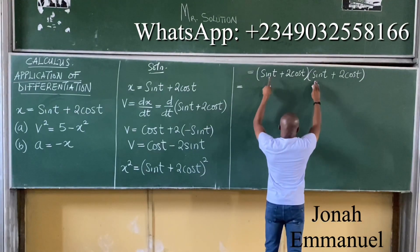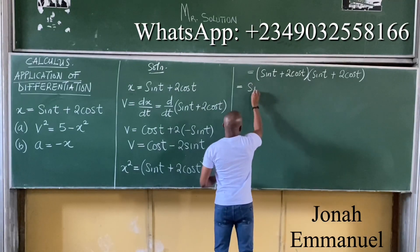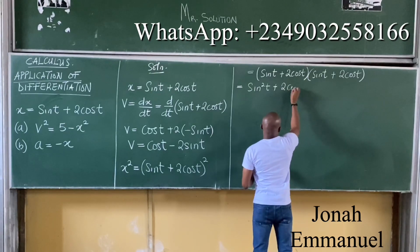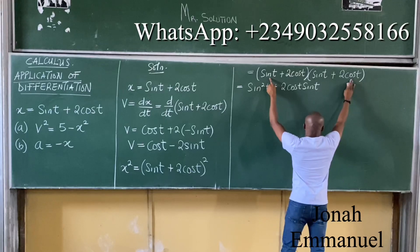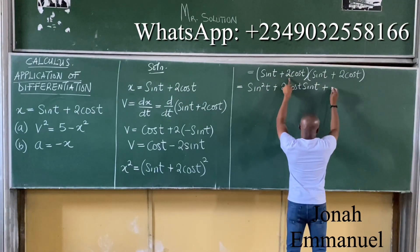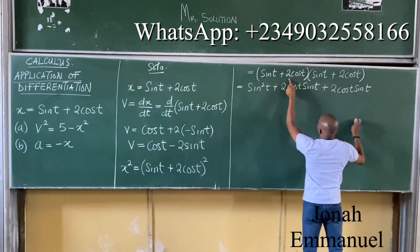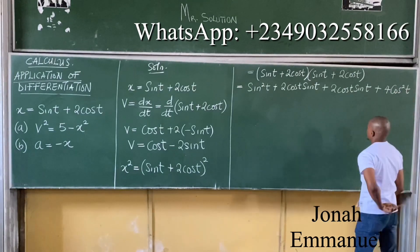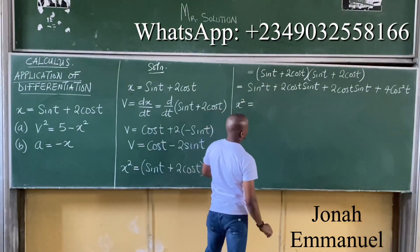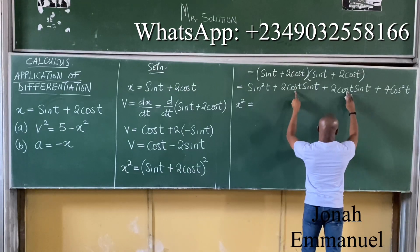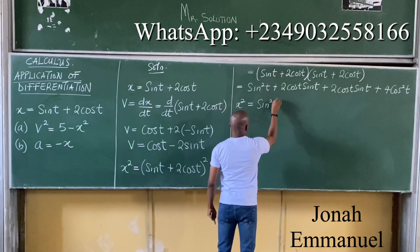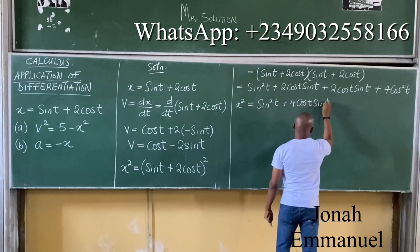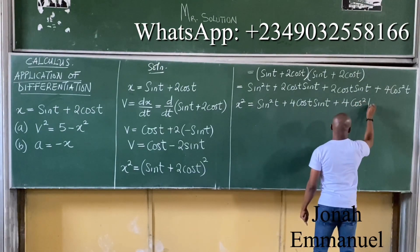Expanding x² = (sin t + 2cos t)²: sin t × sin t gives sin²t; sin t × 2cos t gives 2cos t sin t; 2cos t × sin t gives 2cos t sin t; and 2cos t × 2cos t gives 4cos²t. Collecting like terms: x² = sin²t + 4cos t sin t + 4cos²t.